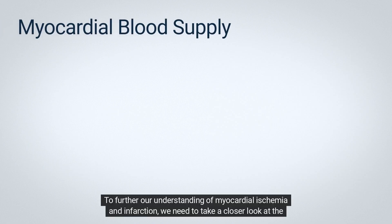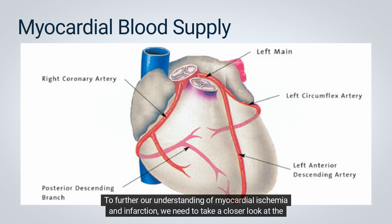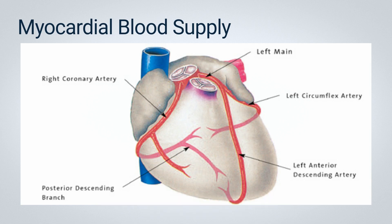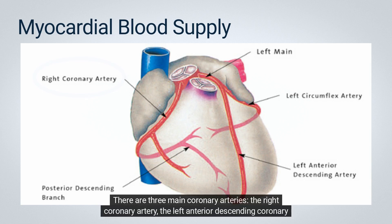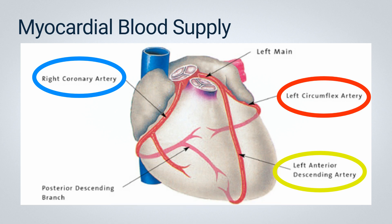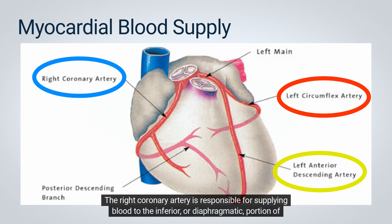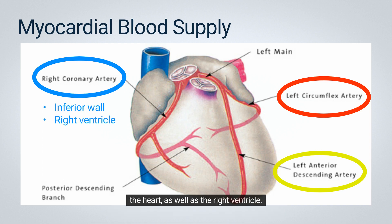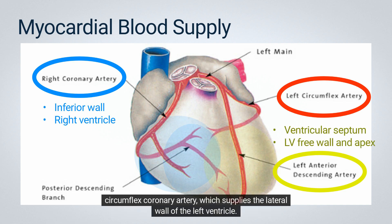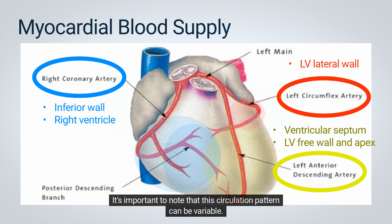To further our understanding of myocardial ischemia and infarction, we need to take a closer look at the myocardial blood supply. The heart receives oxygenated blood from the coronary arteries and their branches. There are three main coronary arteries: the right coronary artery, the left anterior descending coronary artery, and the left circumflex coronary artery. The right coronary artery supplies blood to the inferior or diaphragmatic portion of the heart, as well as the right ventricle. The left main coronary artery divides into the left anterior descending artery, which supplies the ventricular septum and a significant part of the left ventricular free wall, and the left circumflex coronary artery, which supplies the lateral wall of the left ventricle.